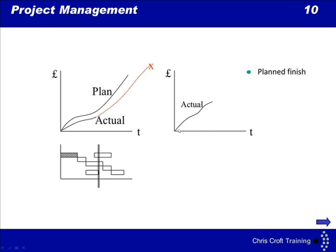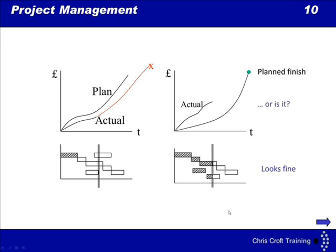What about this one here? This is our actual spend so far. And that's the planned finish point. So it's the finished date and the finished budget. This one looks okay. So rule number one, have a look at the Gantt chart. Now suppose the Gantt chart looks like that. That's fine. We're keeping up with the now line. Everything seems to be fine. It does look fine. But is it?